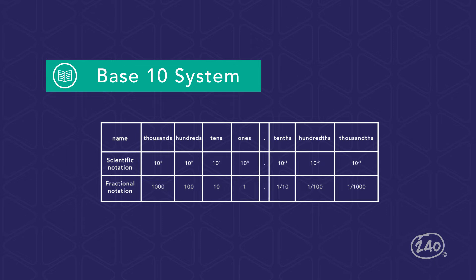When a digit is in a specific position, its value is equal to the product of the digit and the power of 10 that is assigned to its position.